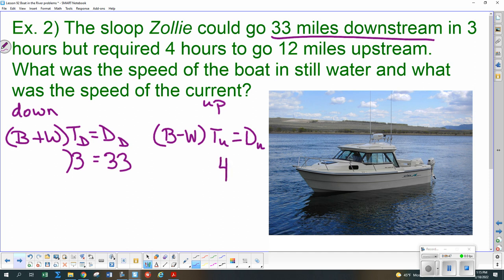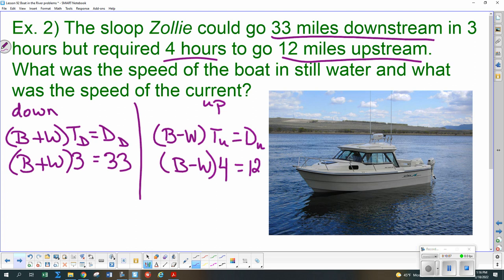Then they tell us the other one. So a 4 here. And we're going to go 12 miles upstream. And that seems to be all the information that they're giving us. So this is B plus W times 3. And this is B minus W times 4. So what should we do next, Addy?